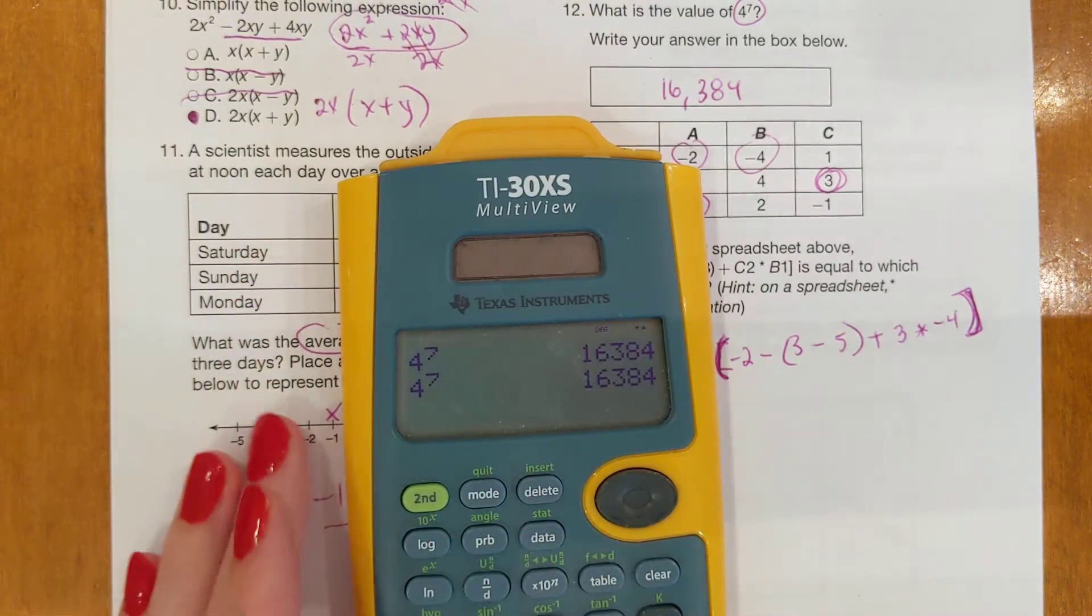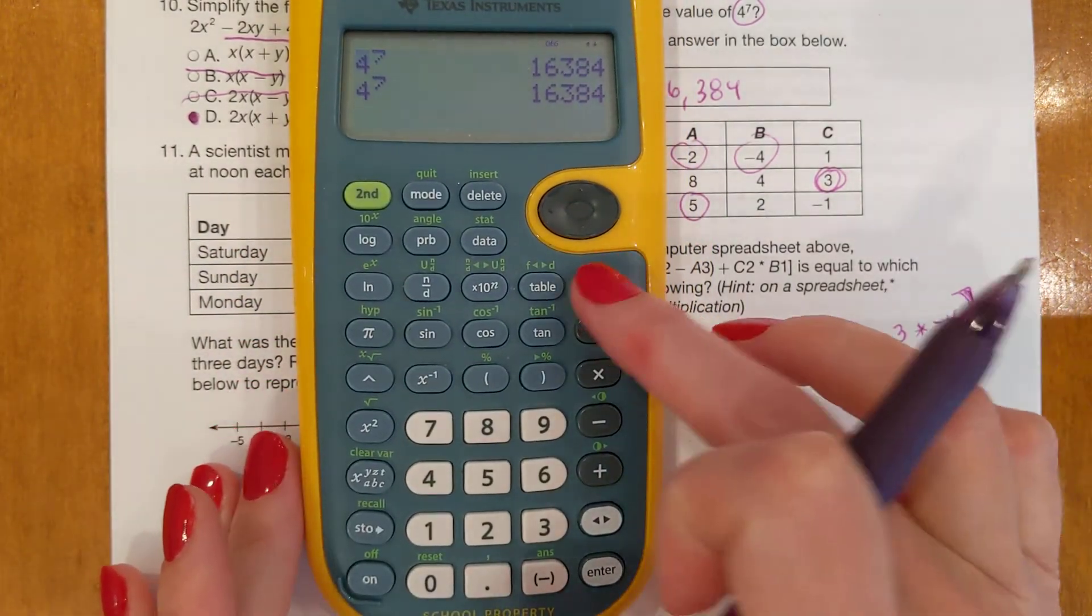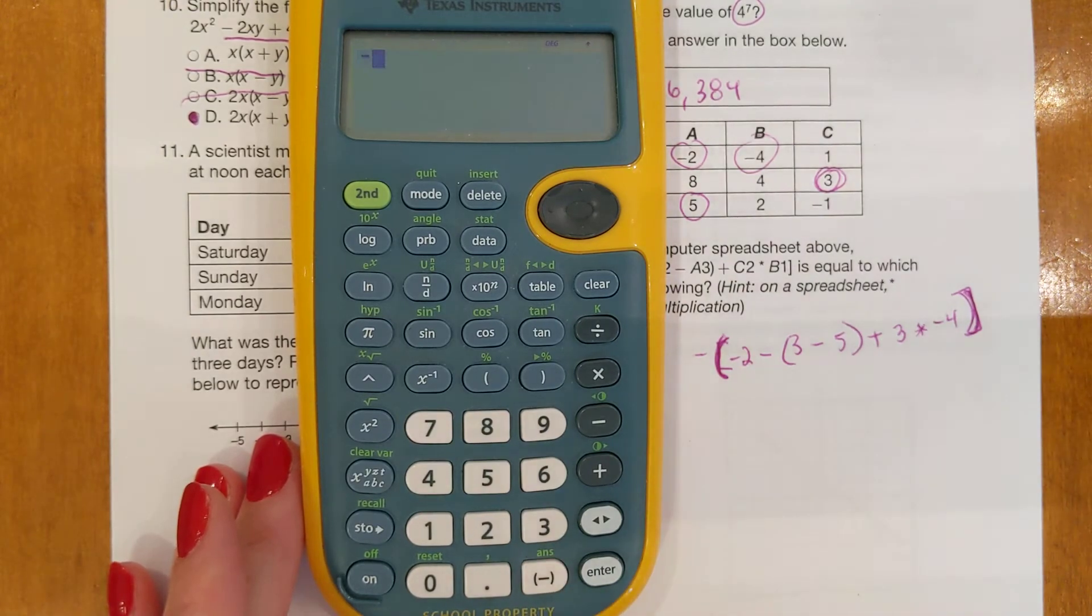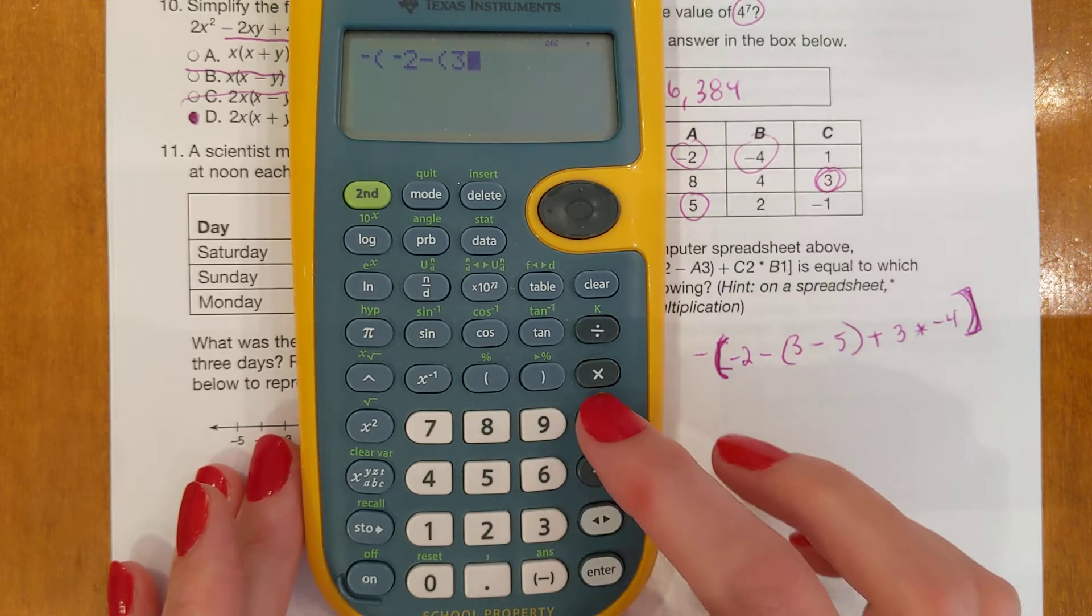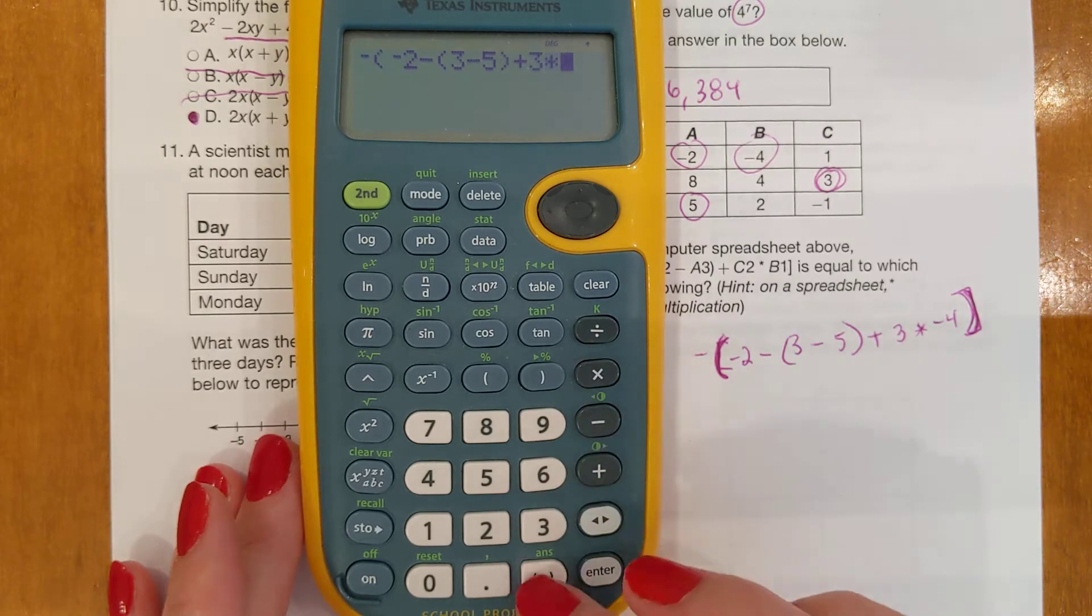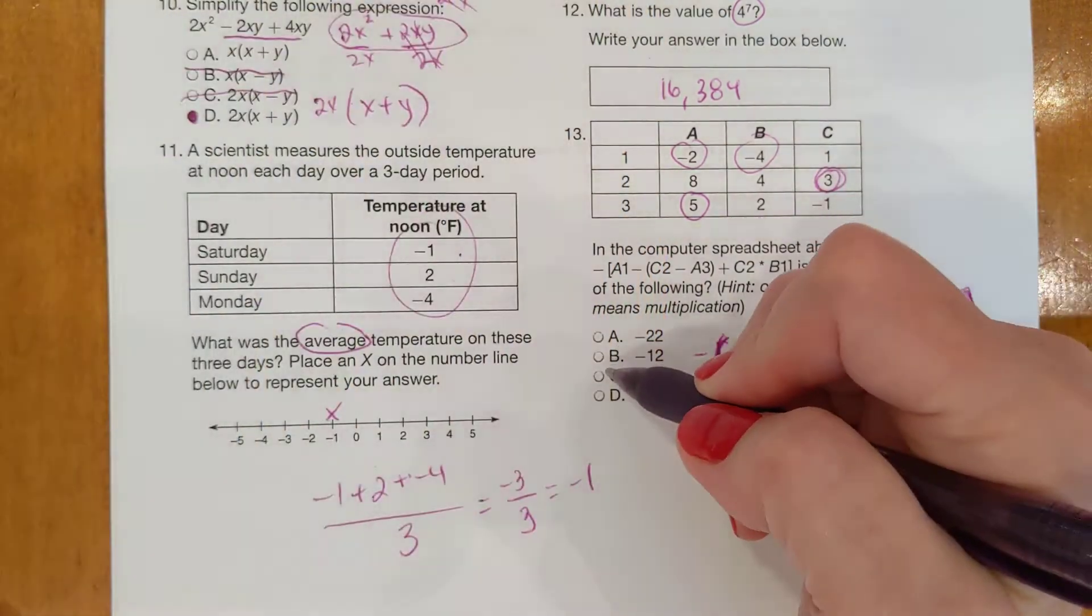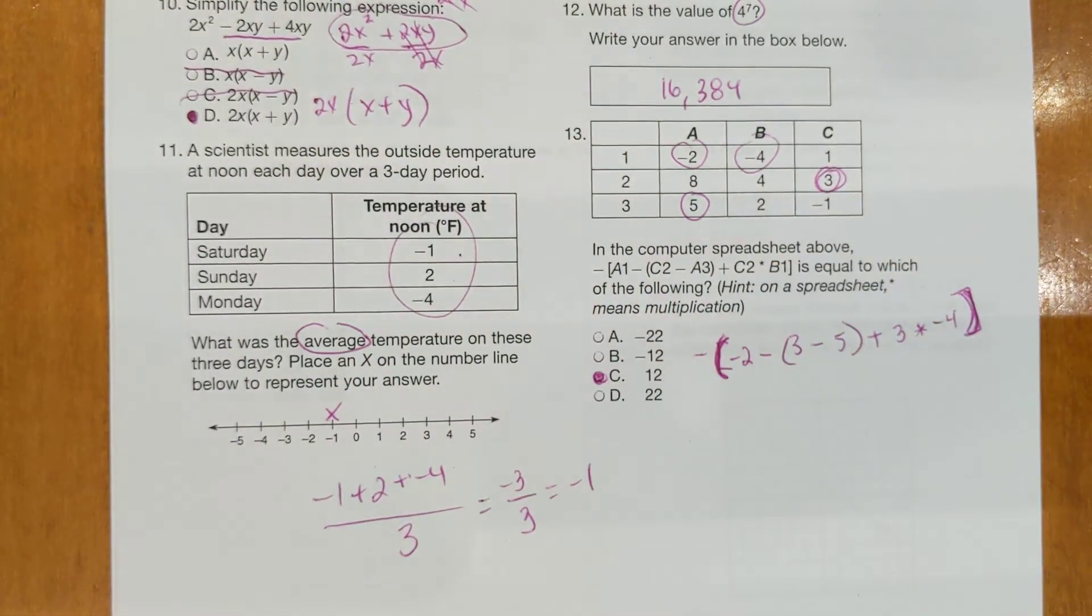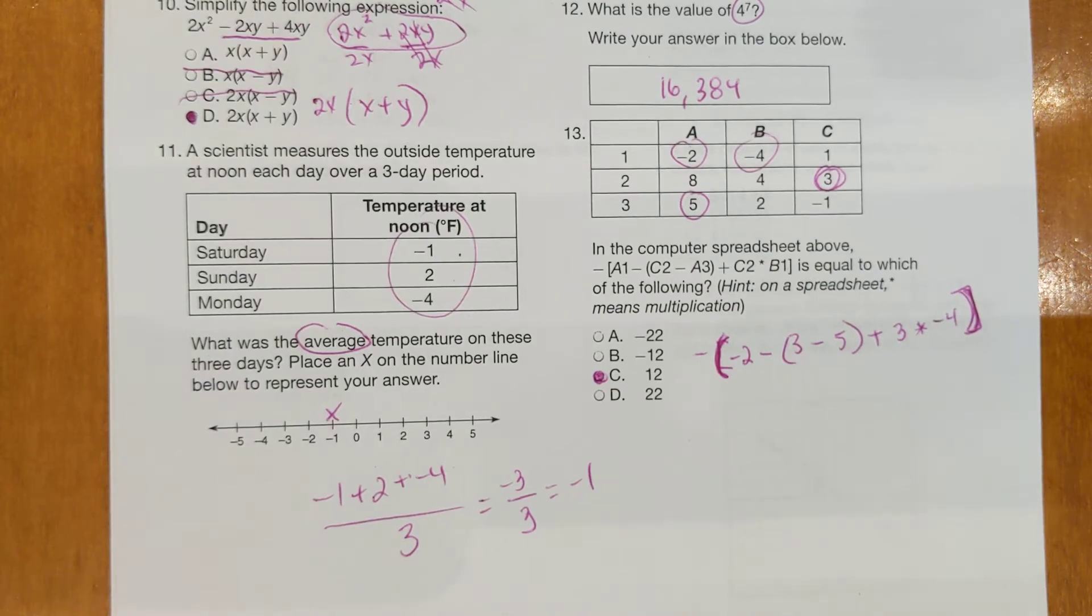Alright, so let's put it in the calculator. Here we go. So, negative on the bottom row, parentheses, negative 2 minus 3 minus 5, parenthesis, plus 3 times negative 4, parenthesis, enter. You get 12. Again, don't try to do PEMDAS. Just put it in the calculator. The test is timed and we need to keep on moving.